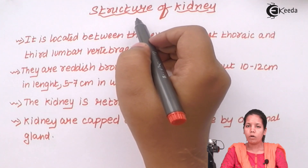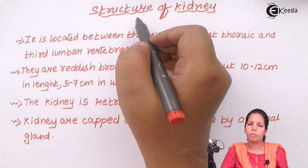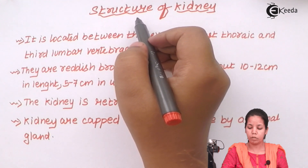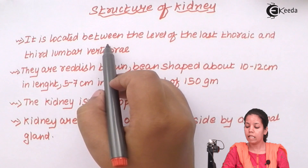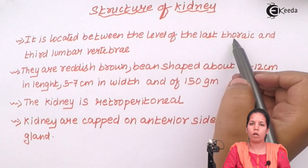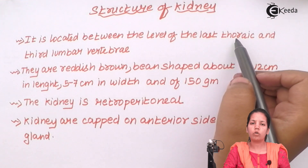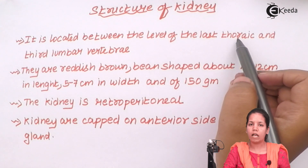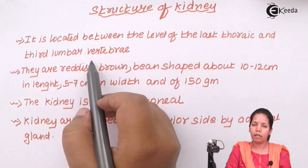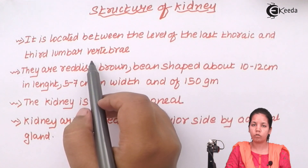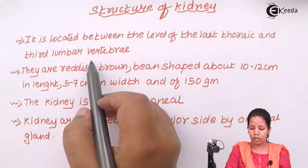If you observe the structure of the kidney in human beings, what we see is that it is located between the last thoracic vertebrae — the thoracic cavity being the space inside which your lungs are situated — and the third lumbar vertebrae in the lower regions of the human body. That is where the kidney is located.